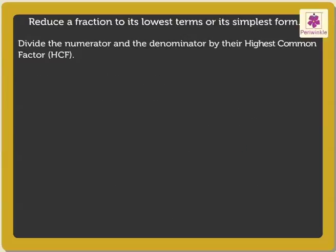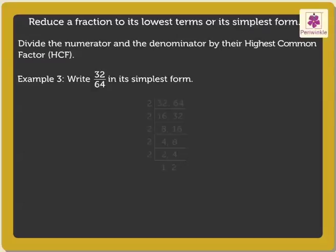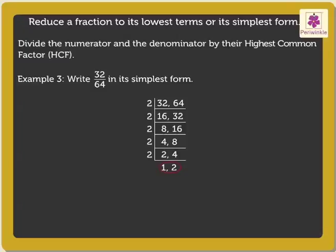Now, let us look at one last example. Write 32 upon 64 in its simplest form. Let us use the repeated division method again. Here we get 1 and 2 as the final quotients. Hence, 1 will be the numerator and 2 will be the denominator. Therefore, 32 upon 64 is 1 upon 2 in its simplest form.